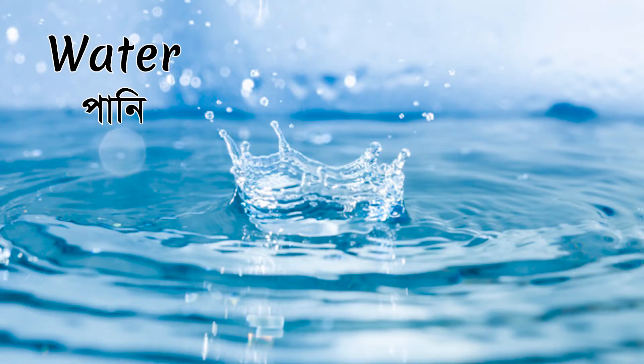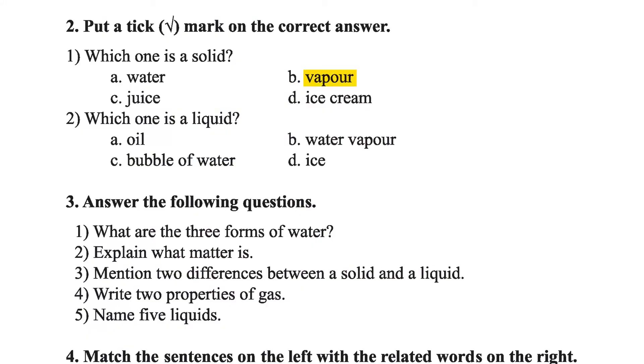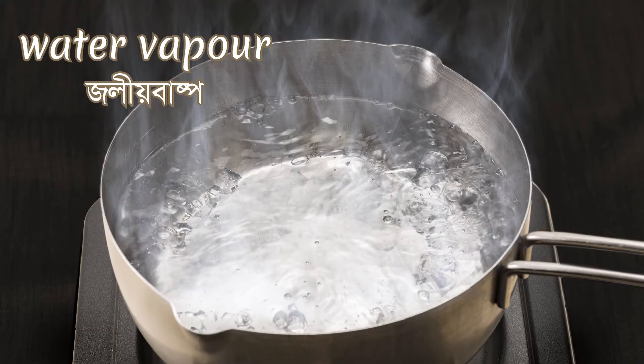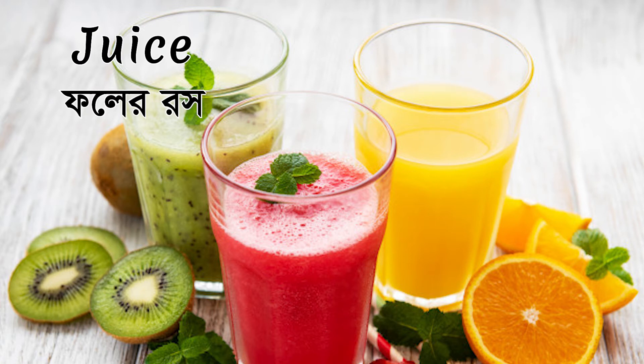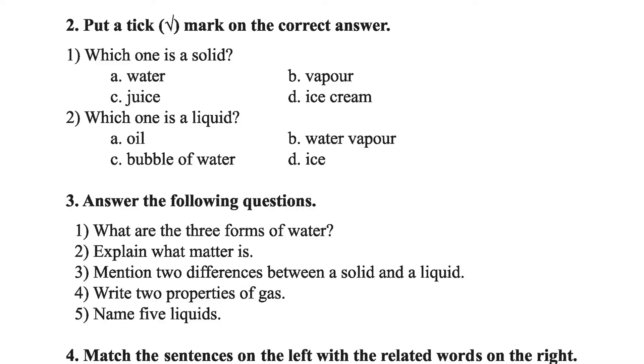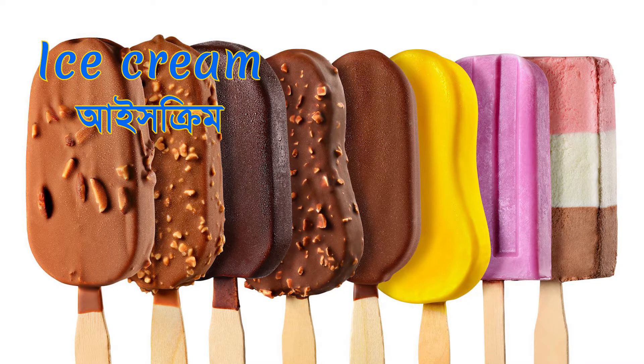A: Water — pani. Is water a solid? No, water is a liquid. B: Vapor — jolibashpo. Is vapor a solid? No. C: Juice — is juice a solid? No. D: Ice cream — ice cream is made from frozen water. So here, ice cream is a solid. Therefore, number 1, the correct answer is D: ice cream.